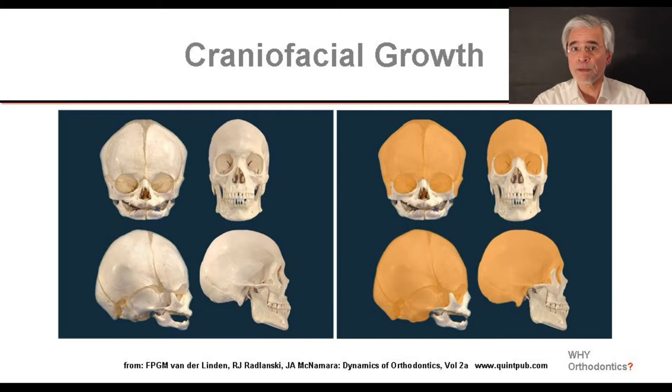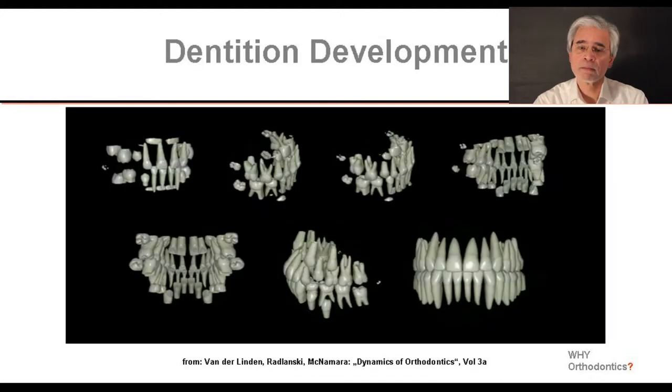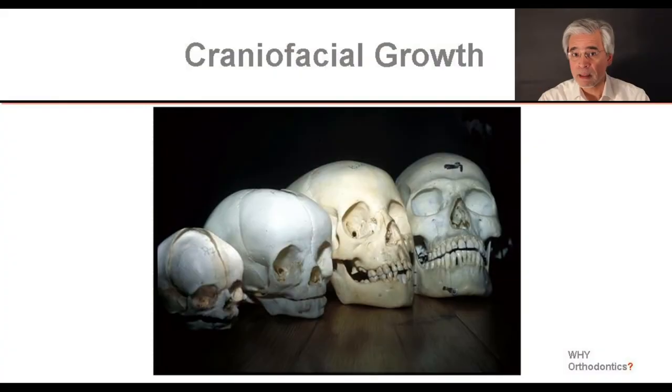We have seen in one of the previous videos how the face grows, and how the dentition develops. Both processes depend on each other. In our orthodontic diagnostics and treatment planning we have to keep that in mind. But they also are separate in a way — it can be that there is only a deviation in the development of the teeth or the dentition, or an uneven development can affect the growth of the entire face, and that is complicated.